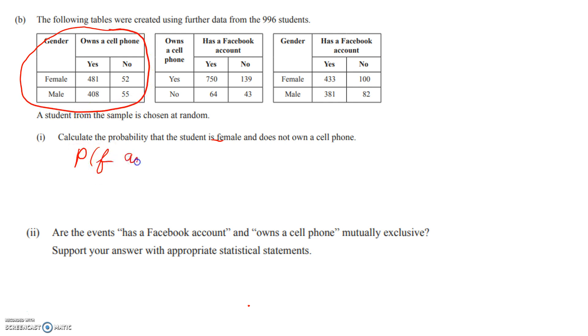So we want to work with this table here. Probability female and no cell. Still going to be out of 996, but it's just going to be 52 students. So that's 0.052. There we go. That's just an achieved question.